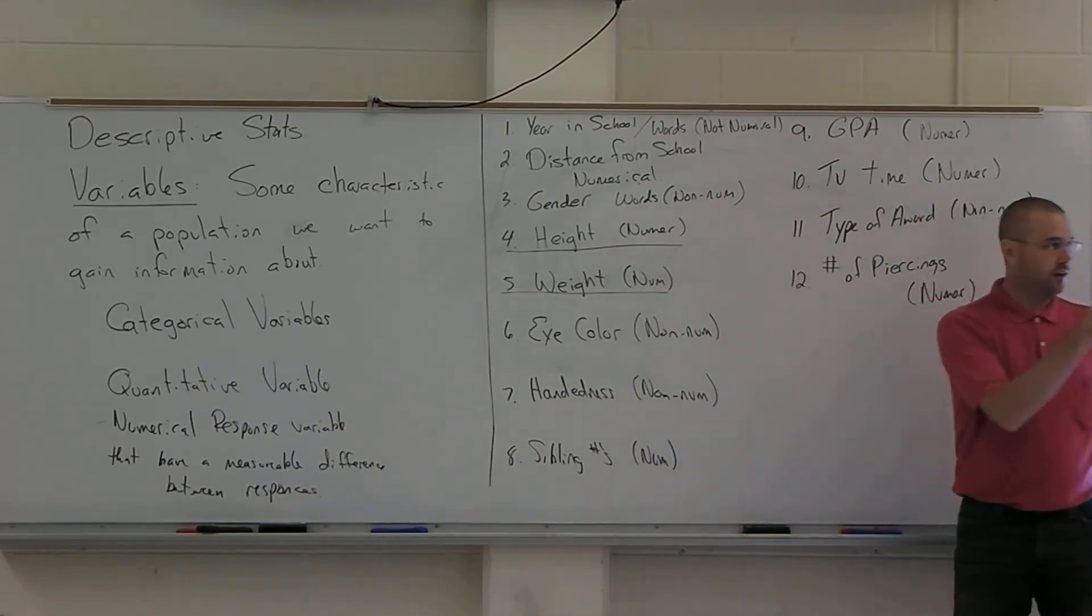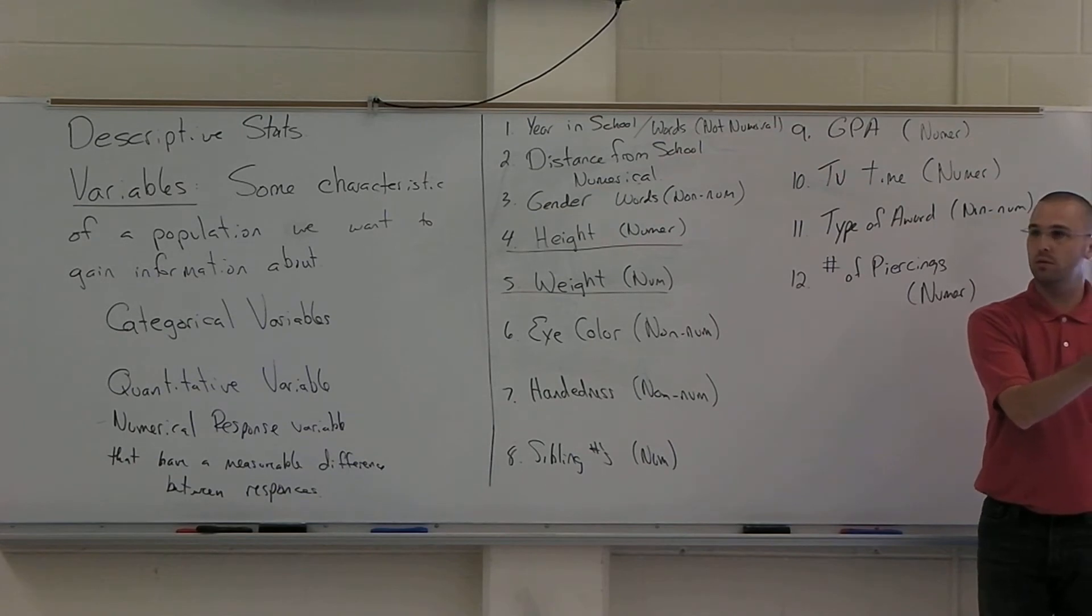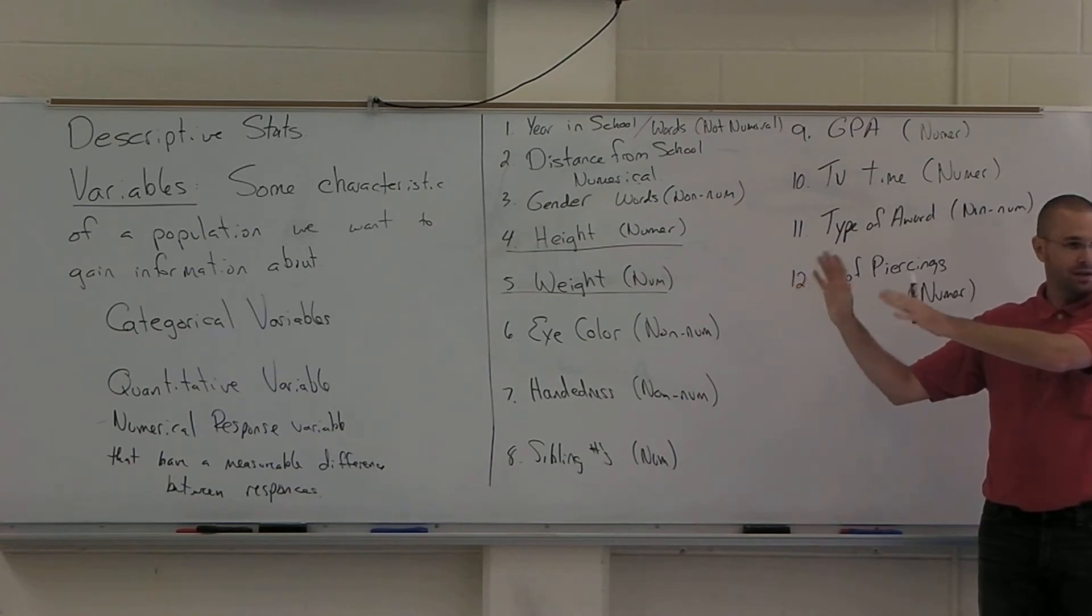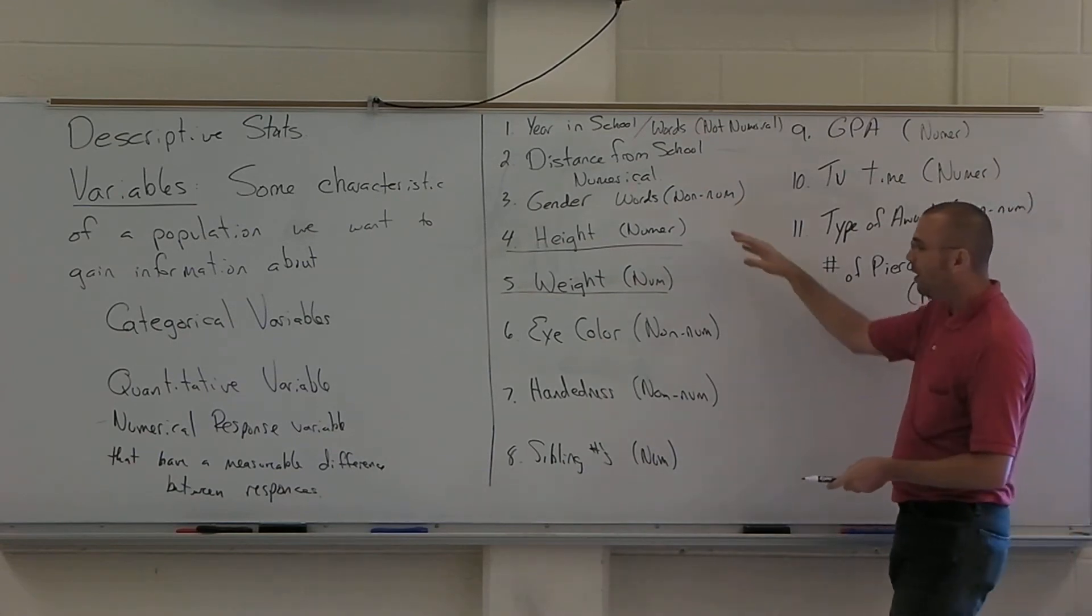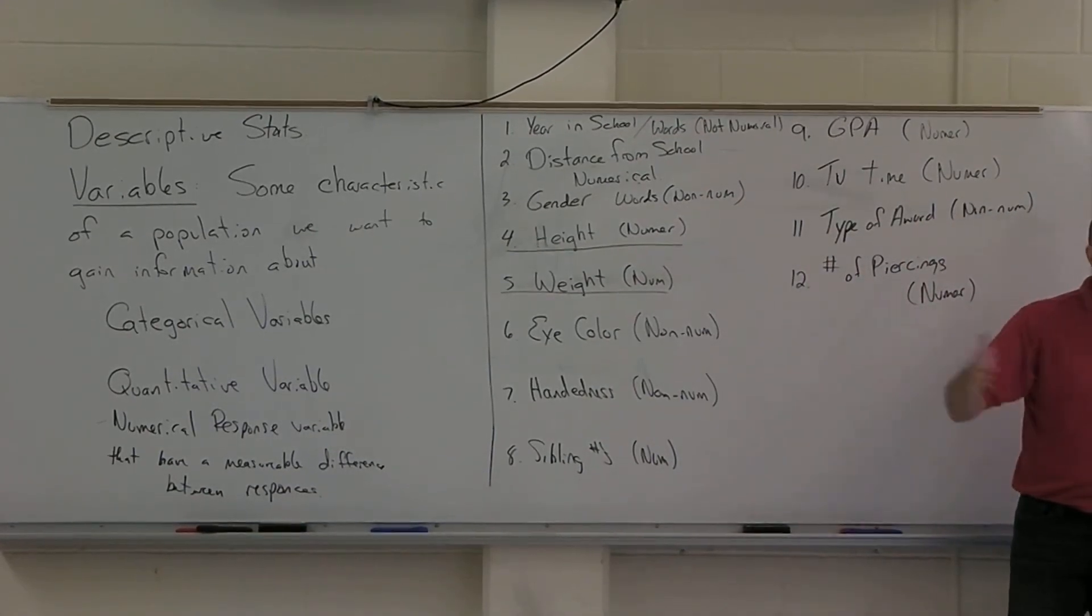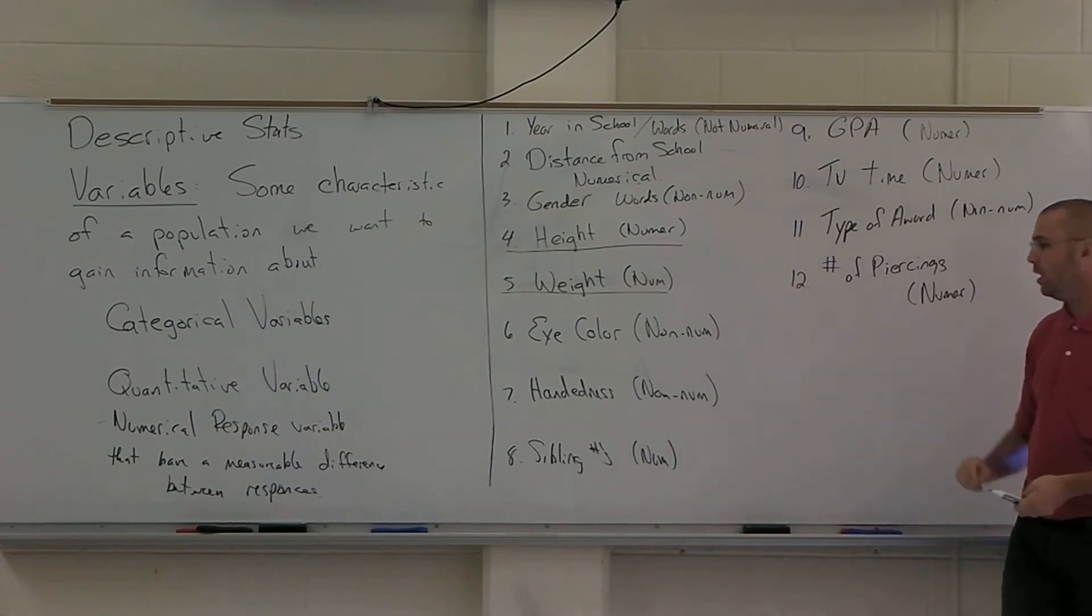Gender. Again, there's a finite number of categories. Male, female, maybe other. Just go with those two. Eye color. Again, finite number of categories. So that's what categorical variables are.